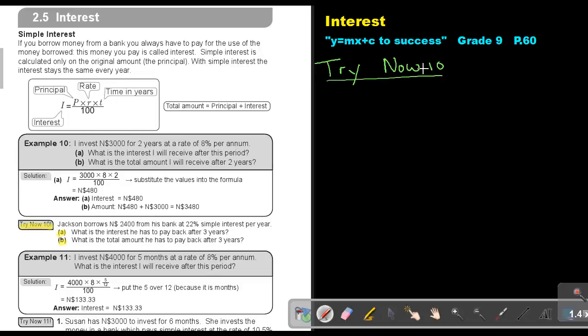Let's look at Try Now 10, number A. Jackson borrows $2,400 from his bank at 22% simple interest per year. What is the interest he has to pay back after 3 years? So let's start with the formula. Interest is the principal multiply the rate, multiply the time, and I divide by 100.